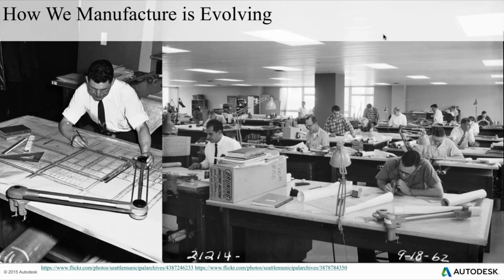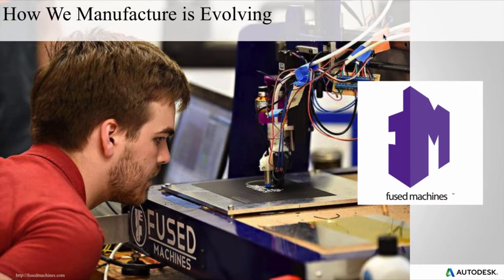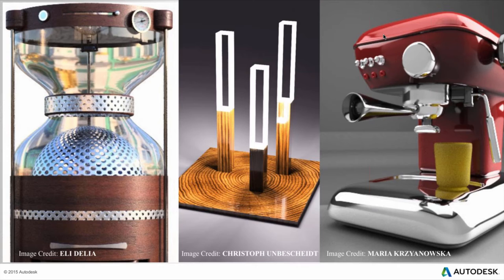Another thing that affects our design is how we manufacture. Here's a picture from Boeing archives of the old drafting board and hand drafting. This is an image of one of our interns — he made his own manufacturing machine that 3D prints and also has a CNC head on it, so you can do additive design and then CNC it to get a nice refined shape with subtractive design. Concepts we couldn't do before are now possible. Here are some examples of designs created using Fusion 360 from our gallery.